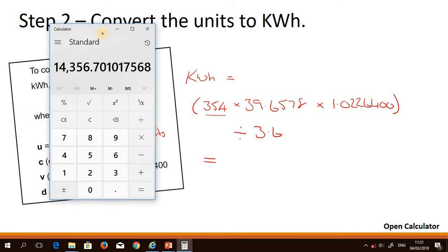And now we'll divide it by the dividing factor, which is 3.6. And we get an answer of 3,987.97250488. But for ease, what we're going to do is we're going to round this to two decimal places. And the reason we do that is because it does make the numbers an awful lot easier to work with.